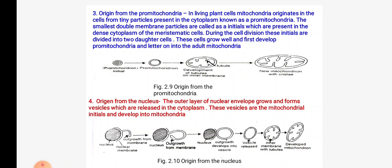In yeast cells, typical mitochondria are absent and fragmented or folded membranes are present. When yeast cells without mitochondria are placed under anaerobic conditions, the existing folded mitochondrial membranes fuse, unfold, and form true mitochondria structures containing respiratory chain components. Another origin is from pro-mitochondria: these are tiny particles present in the cytoplasm with a double membrane structure, from which new mitochondria develop. Mitochondria may also originate from the nucleus, where the outer layer of the nuclear envelope grows and forms vesicles released into the cytoplasm from which small new mitochondria develop.